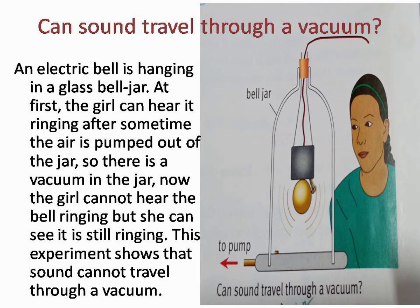The picture shows an experiment to find out whether sound can travel through a vacuum. An electric bell is hanging in a glass bell jar. At first, the girl can hear it ringing. After some time, the air is pumped out of the jar, so there is a vacuum in the jar. Now the girl cannot hear the bell ringing, but she can see it is still ringing. This experiment shows that sound cannot travel through a vacuum.